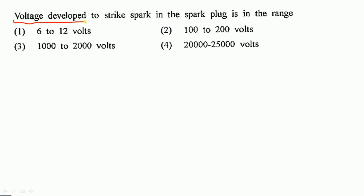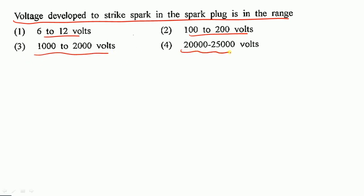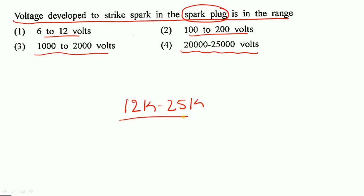The voltage developed to strike a spark in the spark plug is in the range of: 6 to 12 volts, 100 to 200 volts, 1000 to 2000 volts, or 20000 to 25000 volts? For a good spark, the voltage developed in a spark plug is in the range of 12000 to 25000 volts. So option 4 is the correct option.